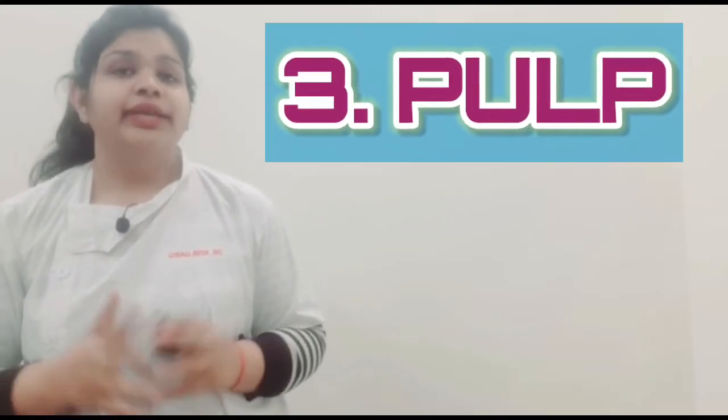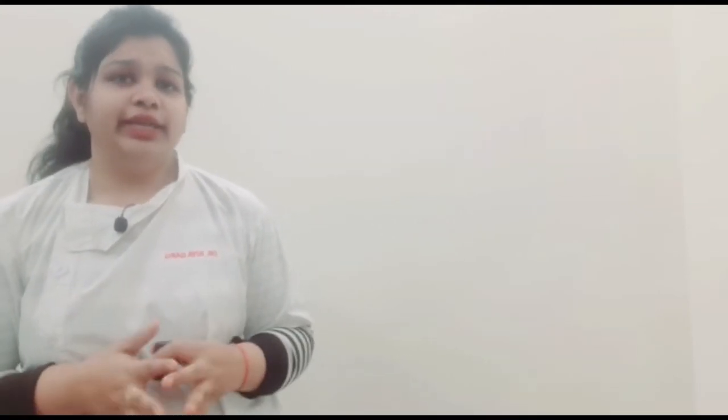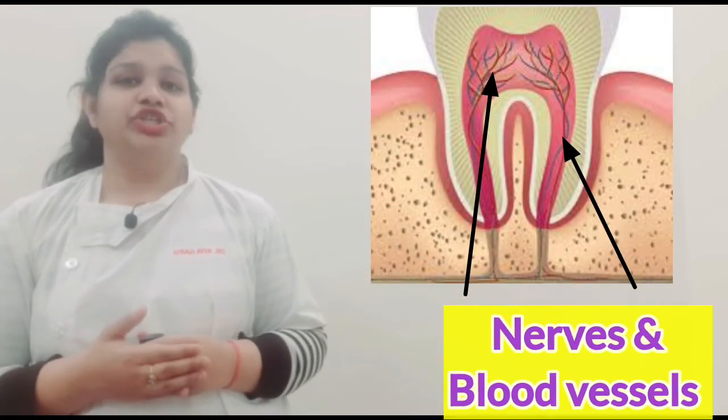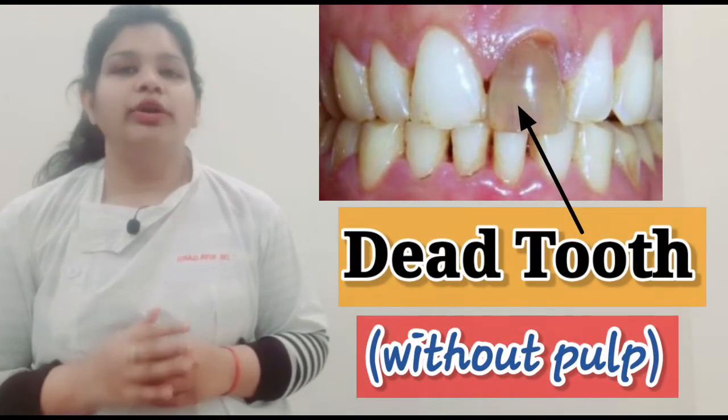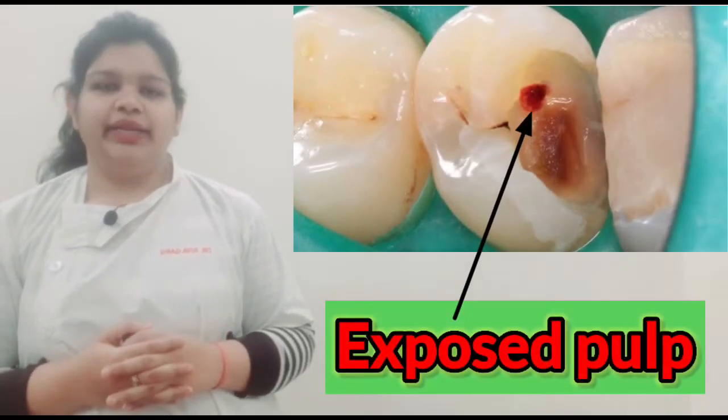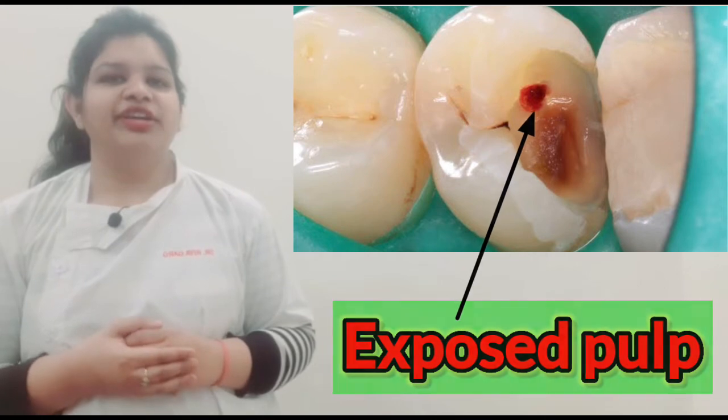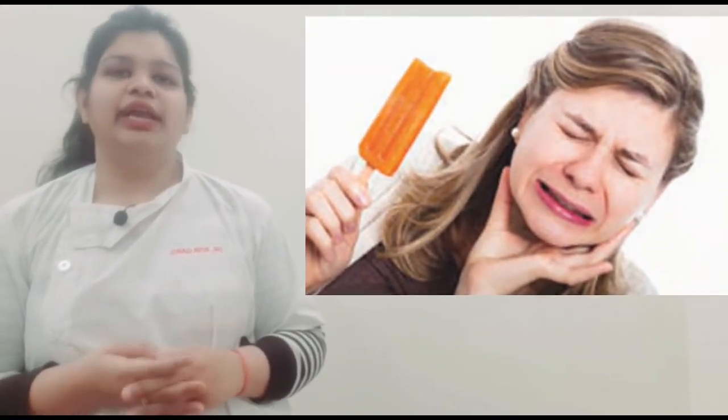The third and innermost layer is pulp. This is a softer layer of teeth as it consists of living tissues, nerves, and blood vessels. This is the only layer which keeps our tooth alive because without it, the tooth will not respond to any stimuli. It is the most sensitive and important layer of our teeth. If the pulp gets exposed to bacteria, then there will be extreme pain and sensitivity in our tooth.